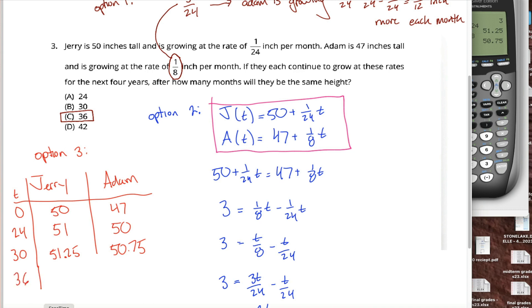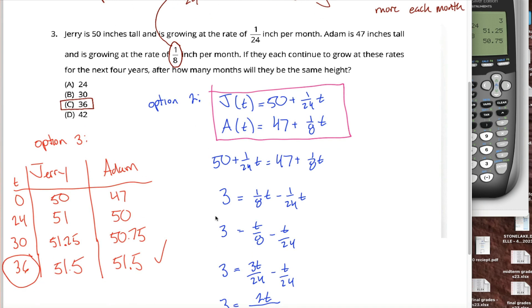Maybe 36 is the right answer. Jerry started out 50 inches tall. 36/24th, the same as 1.5. Don't believe me, use your calculator. So he's 51.5 inches tall. Adam started out at 47. 36/8th is the same as 4.5. So he's 47 plus 4.5. He's 51.5 inches tall. After 36 months, these two people are the same height. Same answer we got with option 1 and option 2.